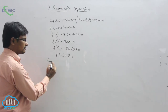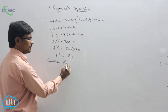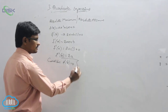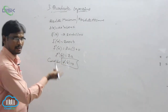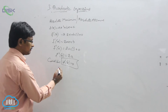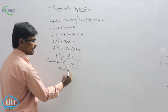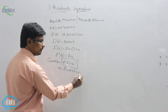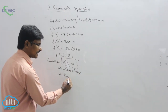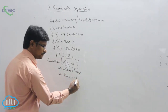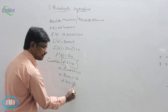Now consider f dash of x equal to 0. This is the method of finding maximum and minimum value in calculus. f dash of x is 2ax plus b equals zero. So from this, the x value is minus b by 2a.